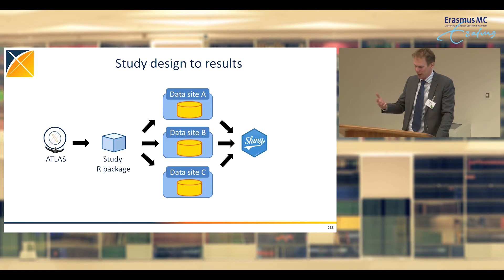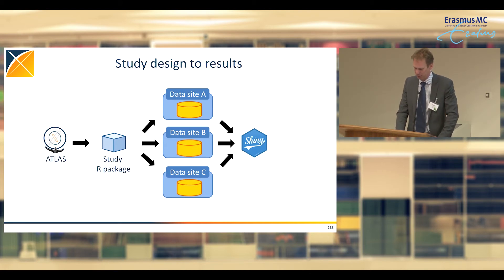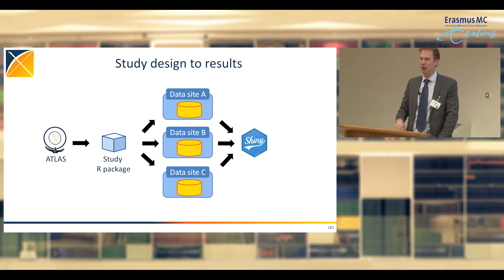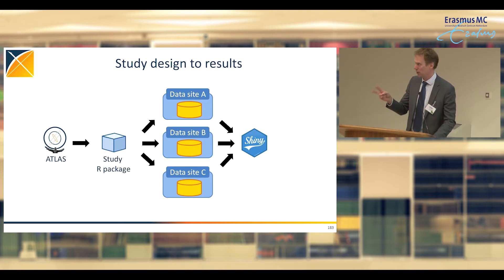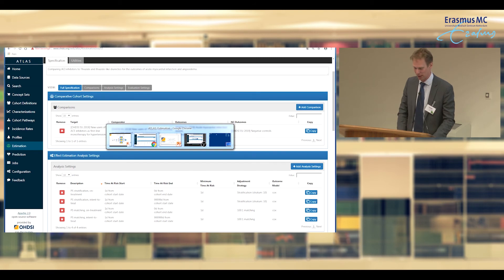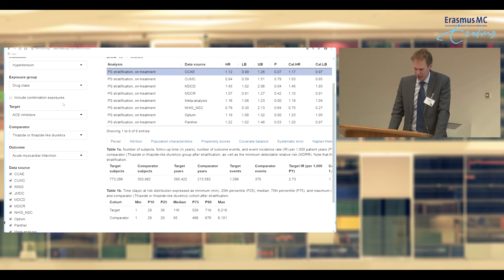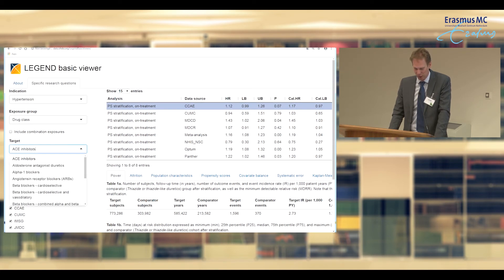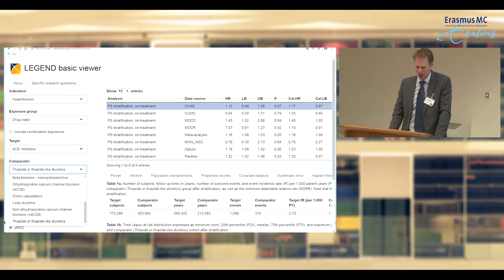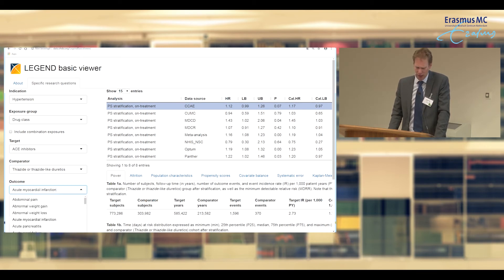Sites report results back, and a Shiny app allows you to view those results. I want to show the Shiny app used in the LEGEND study — almost the same but at a larger scale, comparing all hypertension treatments rather than just two. This is the actual Shiny app currently online. I've selected the drug class level, looking at ACE inhibitors compared to thiazide and thiazide-like diuretics. It's currently set to acute myocardial infarction, but let me switch to angioedema — there are 55 outcomes available to choose from.